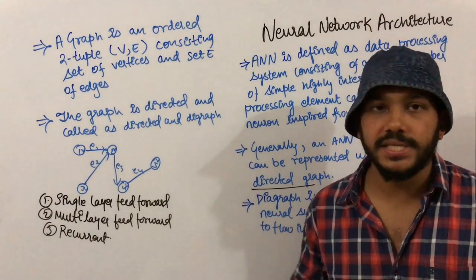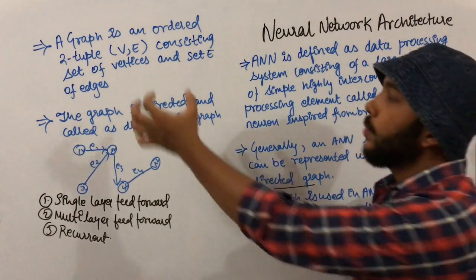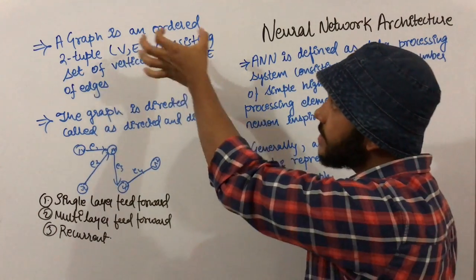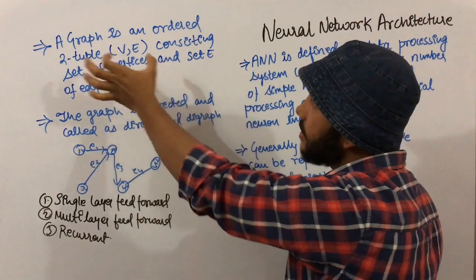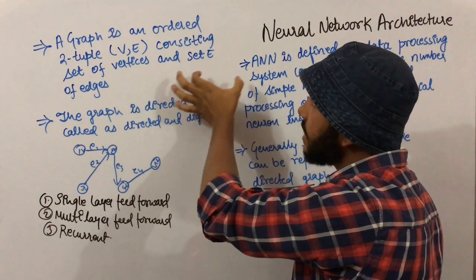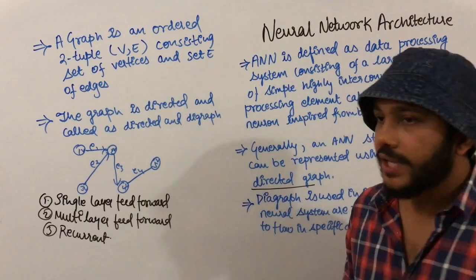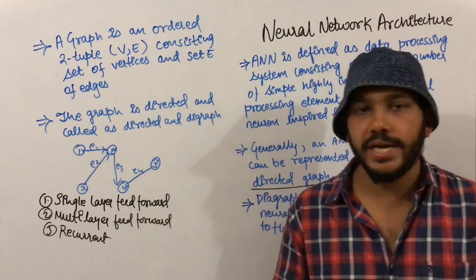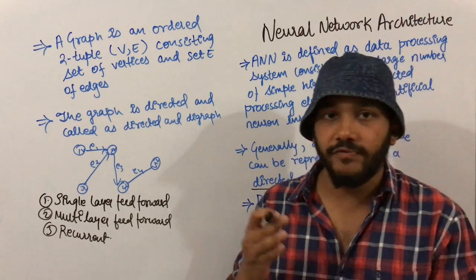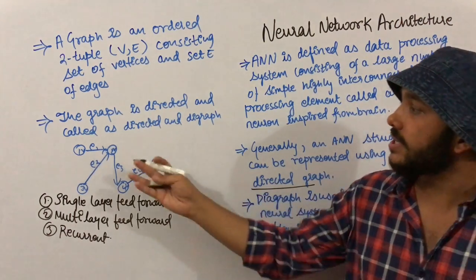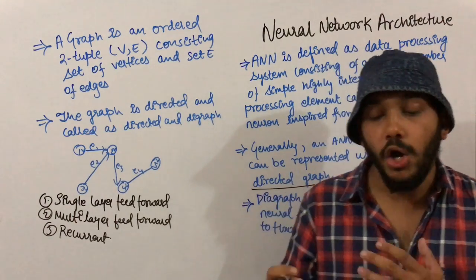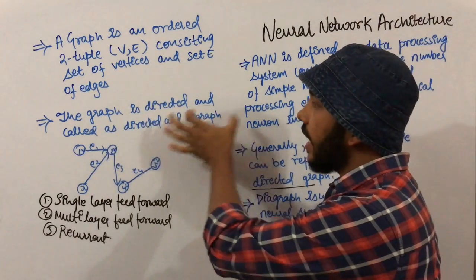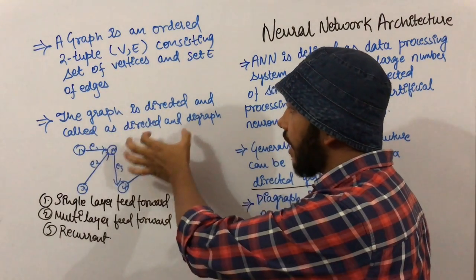The graph we represent in artificial neural networks is a two-tuple, meaning it has vertices and edges. A graph is an ordered two-tuple (V,E) consisting of a set of V vertices and a set of E edges. In artificial neural networks, we represent the graph as a two-tuple where vertices represent neurons and edges represent the weights associated with information. The graph is directed and called a digraph.